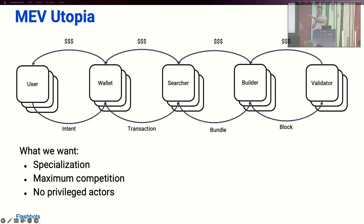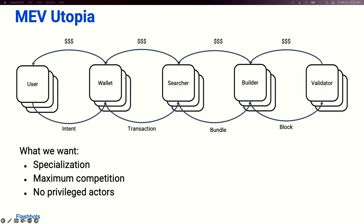This is what utopia looks like — the picture of what we want the future to be. We want many specialized entities being able to play each of these roles in the supply chain, where every party can play one role without having to play a different role as well. For example, you want a validator to just be a validator and not need the skills to be a block builder, because building blocks requires a lot of infrastructure and specialized knowledge. Requiring validators to also build blocks would raise barriers to entry and lower the decentralization of the Ethereum protocol.